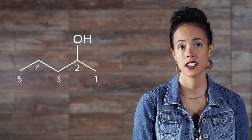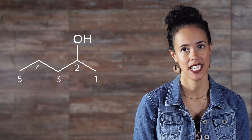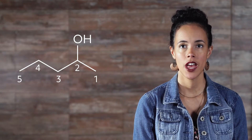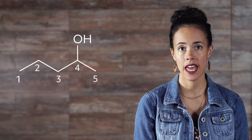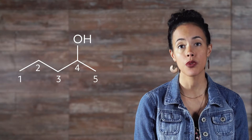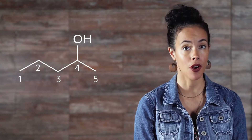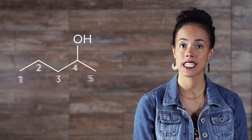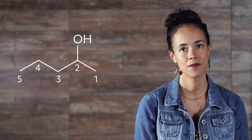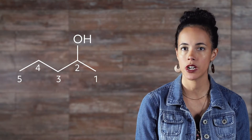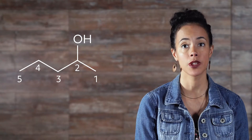Now let's try naming this compound. We'll start by numbering the carbons: 1, 2, 3, 4, 5. There are 5 carbons, so the root word is pentane. The alcohol is attached to the second carbon, giving us pentan-2-ol. Note that if we had counted from the left, the alcohol would be attached to the fourth carbon, and we could have named this pentan-4-ol. But since 2 is less than 4, pentan-2-ol is the correct name. You want to use the lowest number, so start counting from whichever side gives you the lowest number.